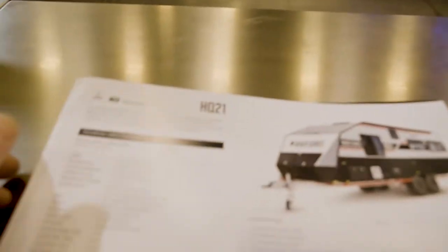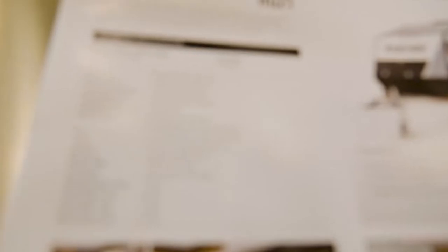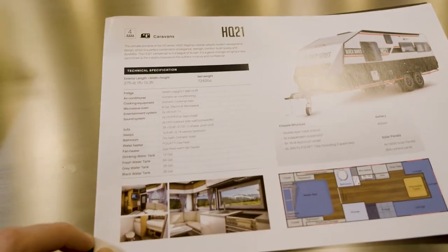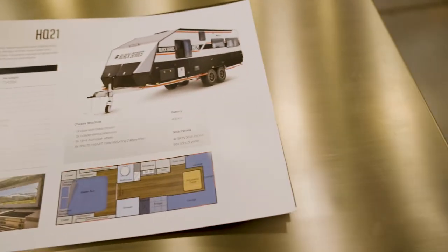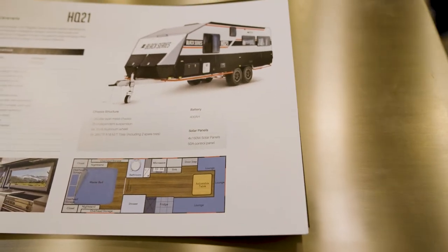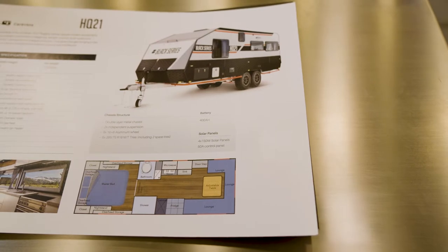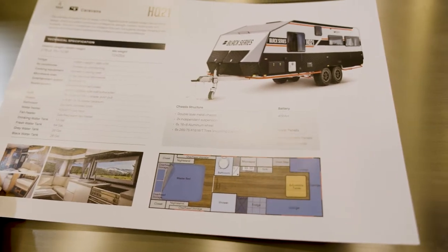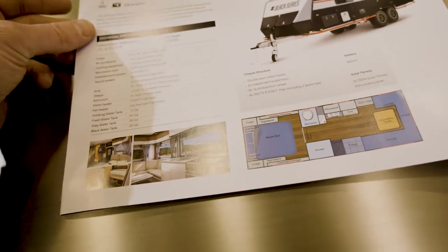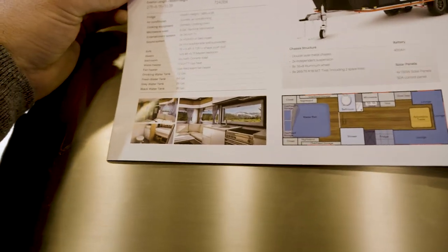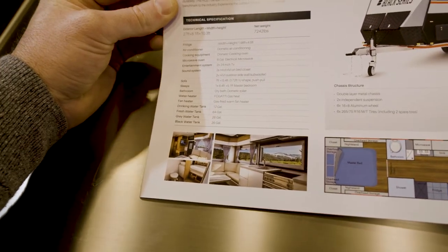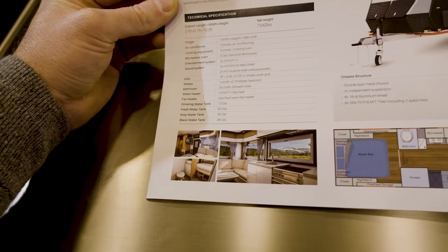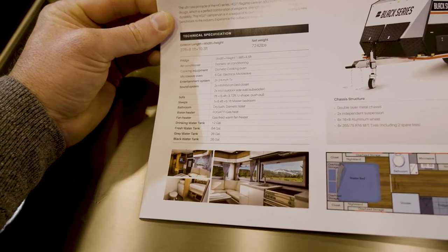So there's a few folks inside. I'll just go over the specs real quick. The net weight is 7,242 pounds. So not too bad. I could tow that with most half ton trucks or some V8 SUVs. So this one's got an AGM battery, 400 amp hours, and it's got four 150 watt solar panels. Tank sizes on this: fresh water, 64 gallons; gray tank, 26 gallons; and black water tank is 26 gallons. So not too dissimilar from the base camp. However, that fresh water capacity is like three times the base camp.